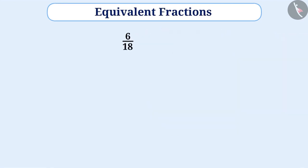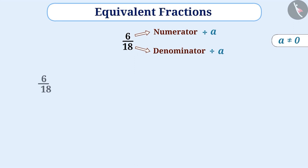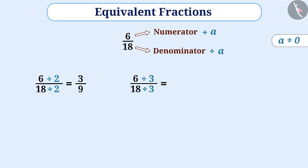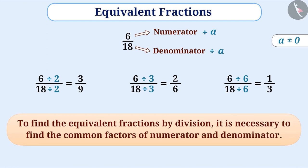Similarly, in order to find the equivalent fractions of any given fraction, we can divide its numerator and denominator by the same number. For example, to find the equivalent fractions of 6 by 18, the numerator and denominator can be divided by 2, which gives equivalent fraction 3 by 9. Dividing by 3 gives an equivalent fraction of 2 by 6, and dividing by 6 gives an equivalent fraction of 1 by 3. To find the equivalent fraction by division, it is necessary to find the common factors of numerator and denominator.